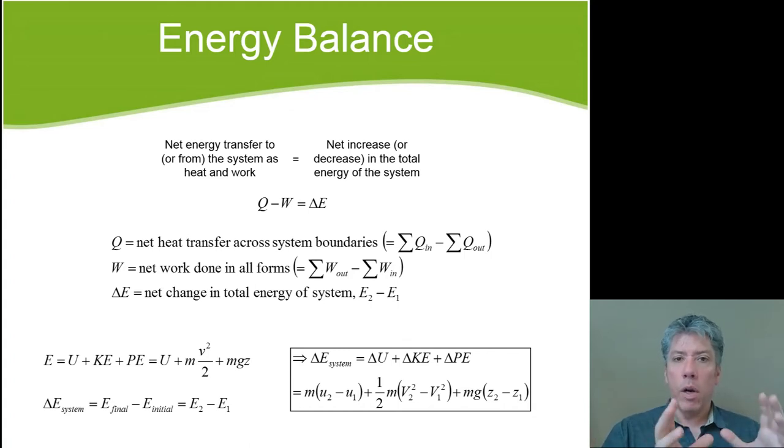Now, of course, heat and work are the two types of deposits and withdrawals we will consider, and that changes the account balance, just like it would change the amount of money in your account. So what you have to be careful about, though, is this energy balance form that we have, Q minus W equals delta E. What is it really? Well, Q and W are the net amount of heat transfer coming into the system, and the W term is actually the net amount of work done by the system in all forms.